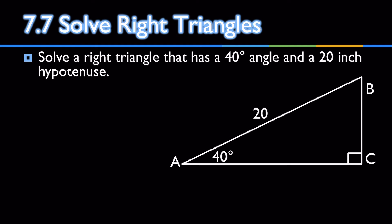Here is a right triangle. It has a 40 degree angle and a 20 inch hypotenuse. So, solve it. That means we need to find everything else. What's the easiest? Finding angle B would be the easiest. If I add together all the angles, angle A plus angle B plus angle C equals 180, we'll find out that angle B is 50 degrees.